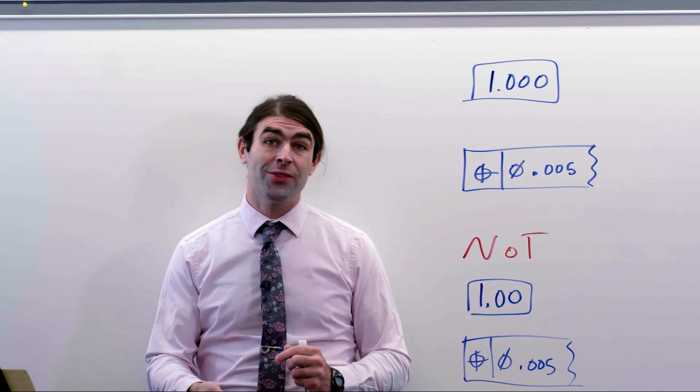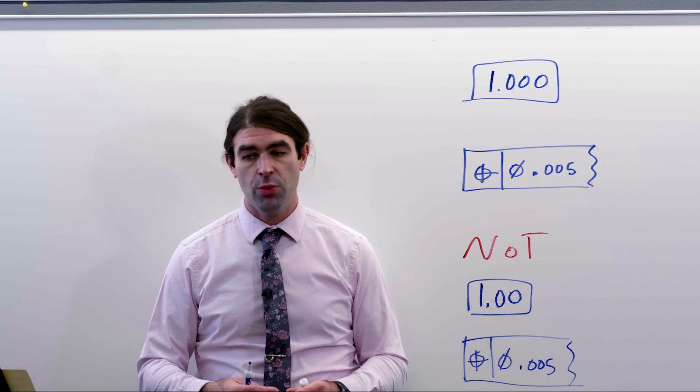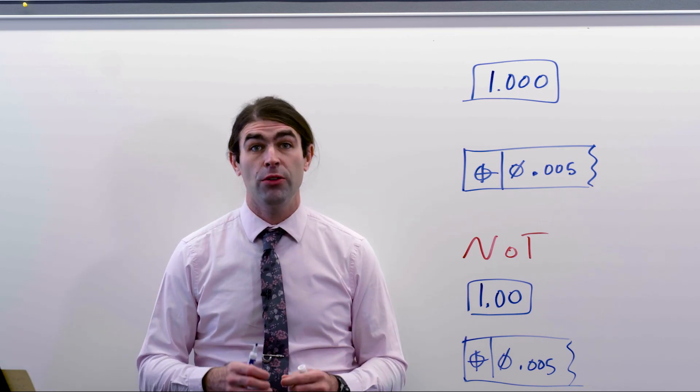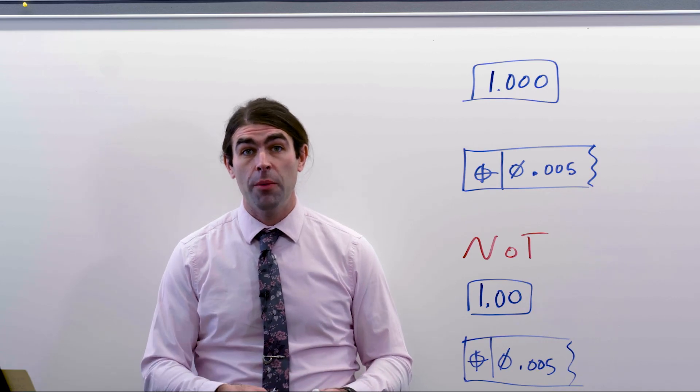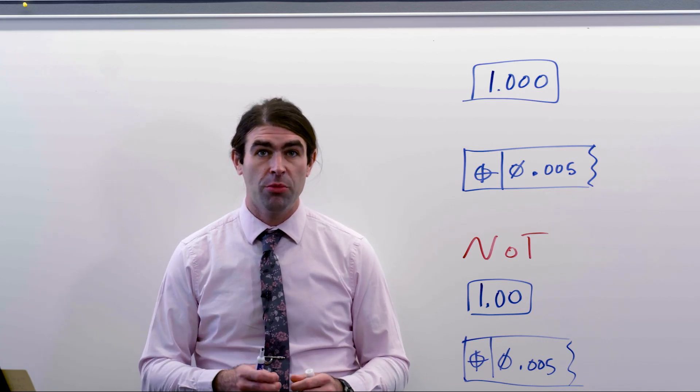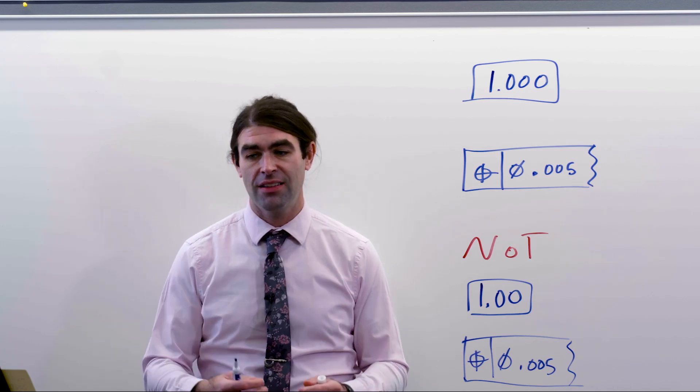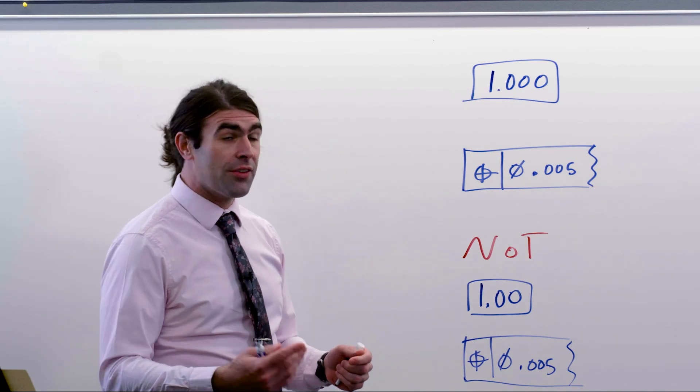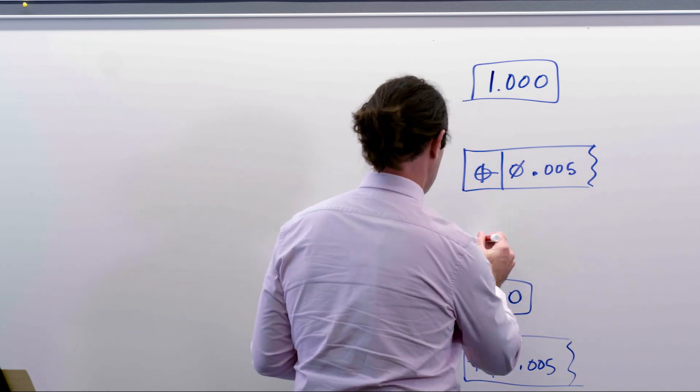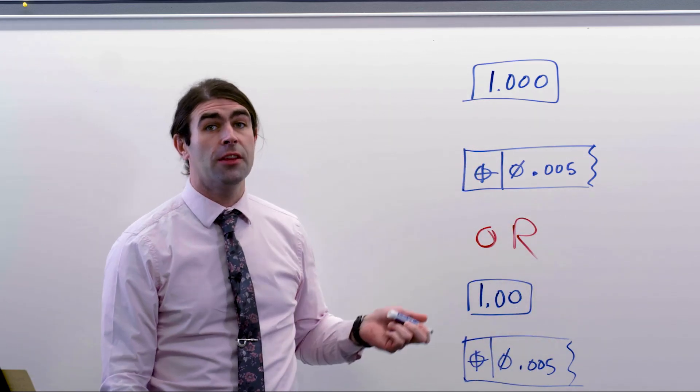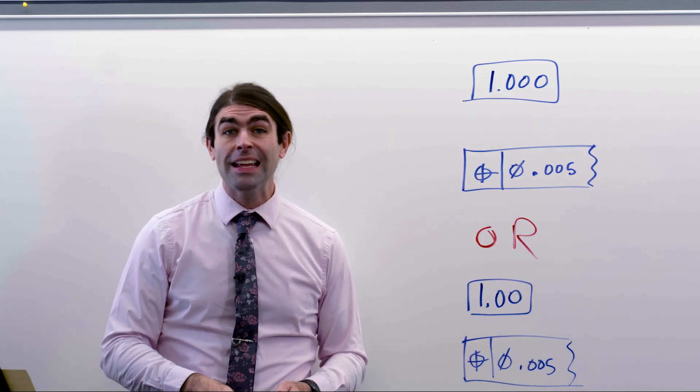Now, this changes in the 2009 standard. On page 26, it states that there is no requirement for the basic dimension value to be expressed with the same number of decimal places as the tolerance. So, in the 2009 standard, you can do this either way. It doesn't matter.